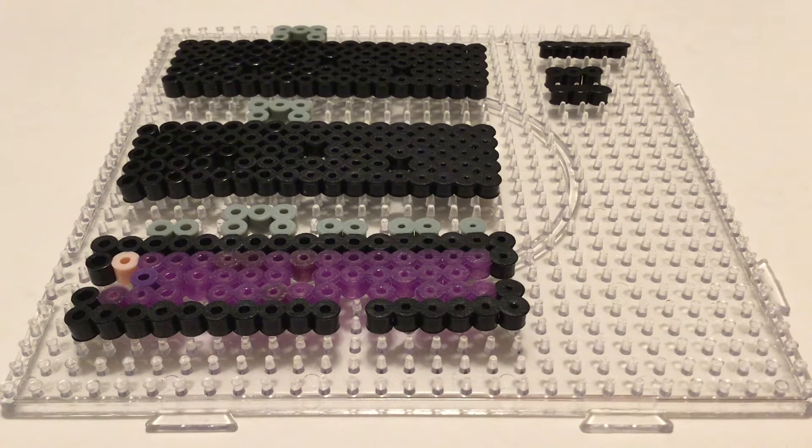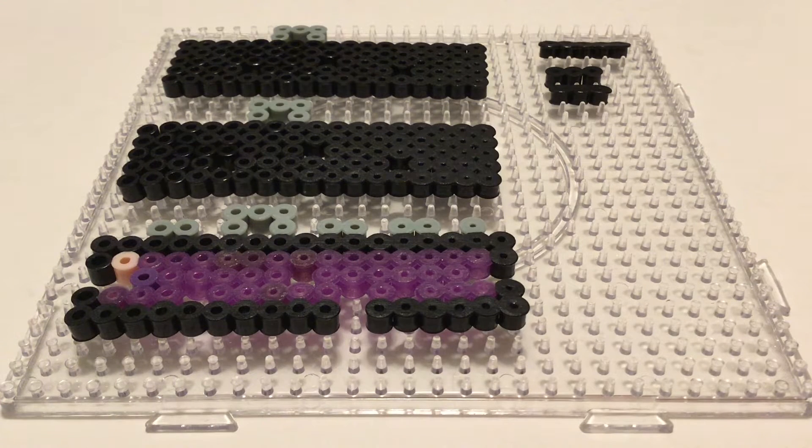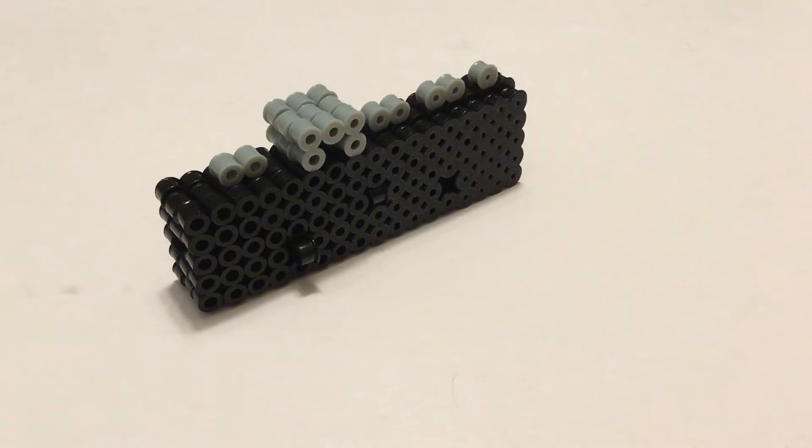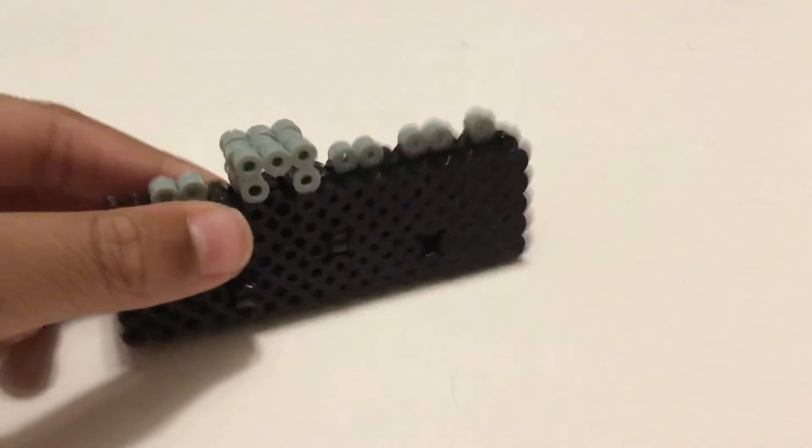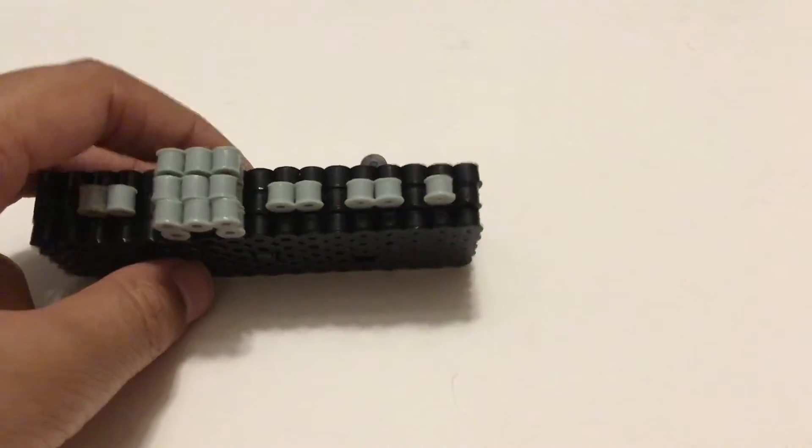So, let's iron them and assemble. Here we have the main body built and you put the things through the holes to attach it on. So, let's add the wings now.